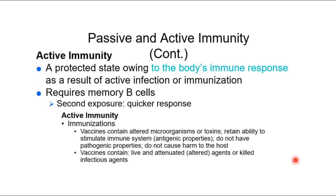Active immunity is about the body's own immune response — it's related to specific immunity. It means we have T cells, B cells, a thymus gland, a spleen, and sites of maturation for specific immune cells. It can be natural or artificial — for example, if you were exposed to cowpox naturally, you'd develop antibodies as a natural form of active immunity.